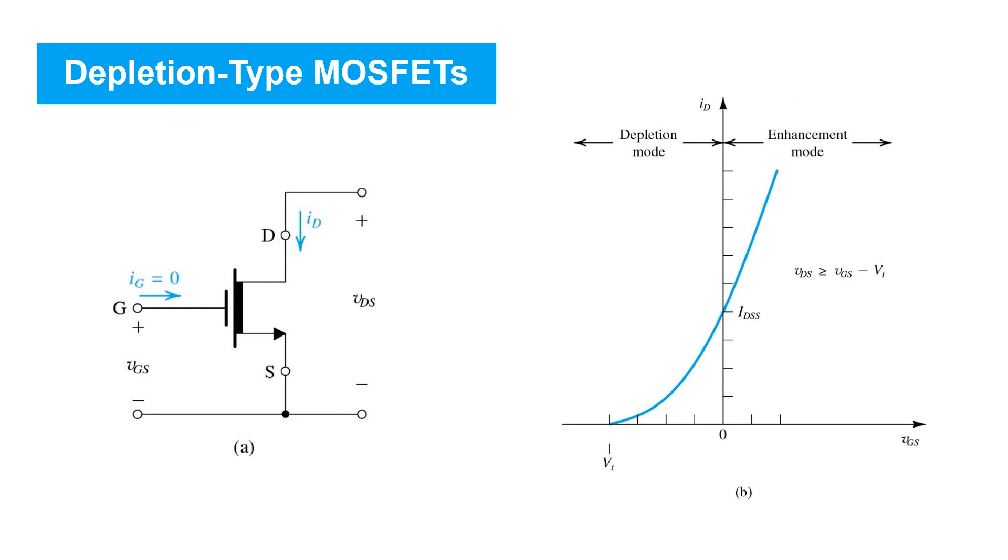Note that the overdrive voltage is still equal to the gate source voltage minus the threshold voltage, even though the threshold voltage is negative. And the condition for ensuring that the transistor is in saturation is the same as it was for enhancement mode devices. That is, VDS has to be greater than the overdrive voltage.